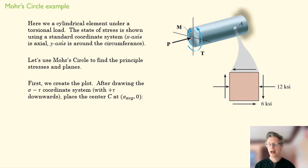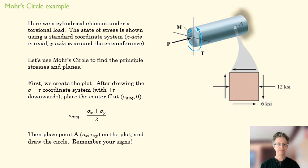We want to place the center at sigma average and 0. What's our sigma average? Keep your signs in mind. We have a 0 for sigma y, we have a negative 12 for sigma x. And so we can place our center on our coordinate system.